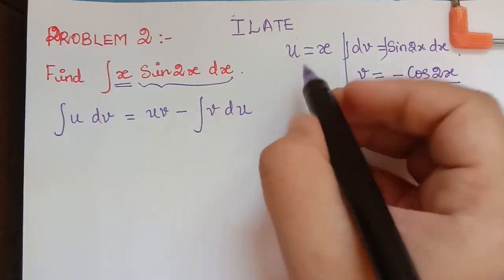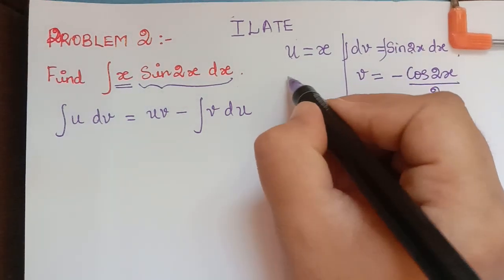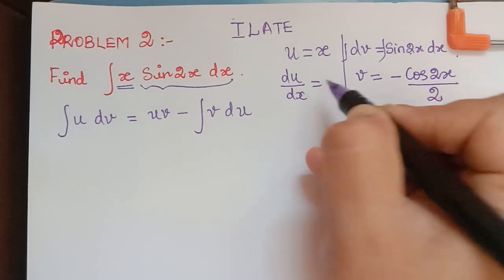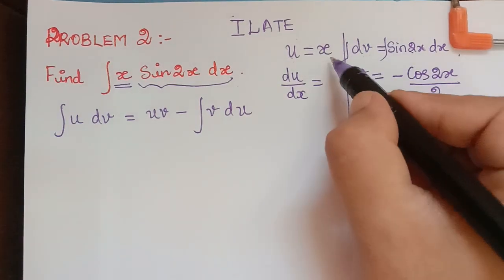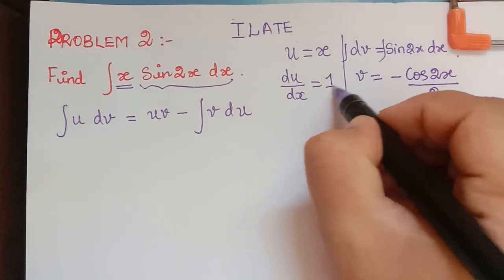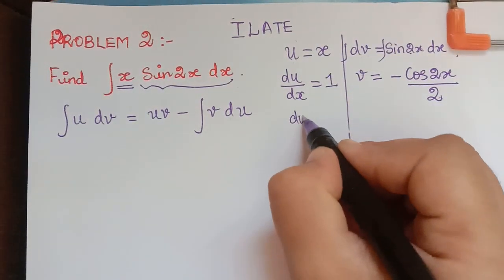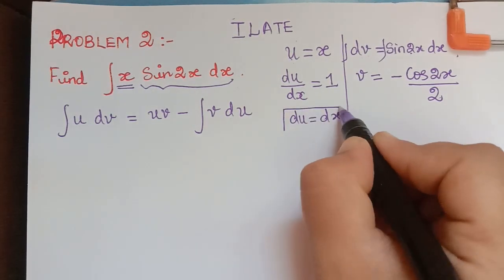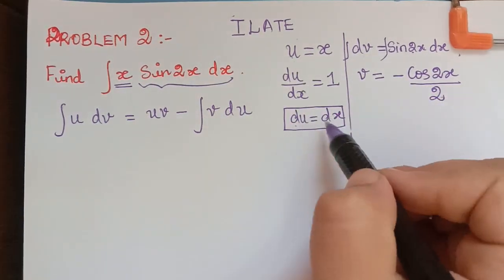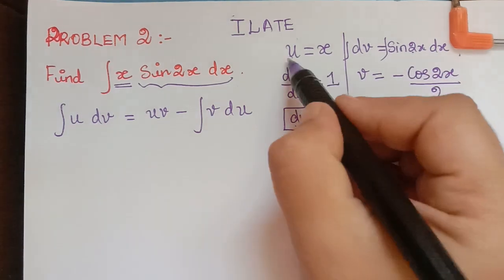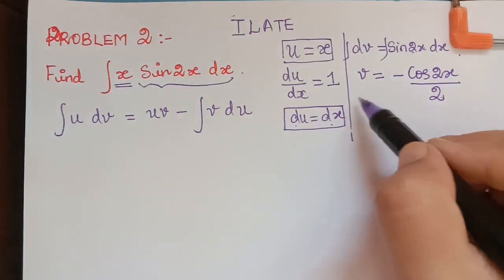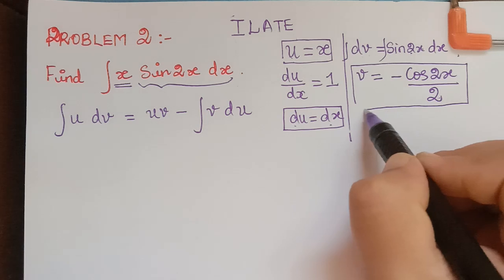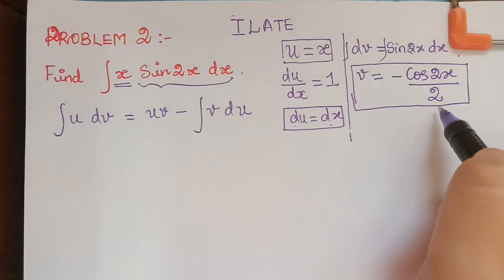This is our v. After that we need du in the formula, for which we have to differentiate u. Differentiation of u with respect to x gives du/dx equal to 1 since the differentiation of x is 1. So du equals dx. We have: du = dx, u = x, and v = −cos 2x / 2.